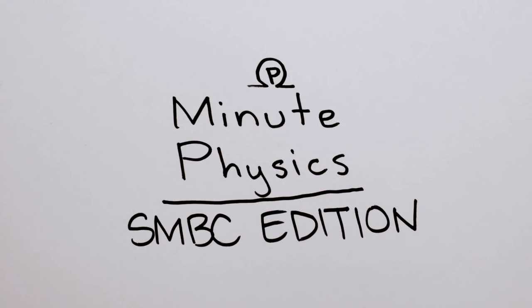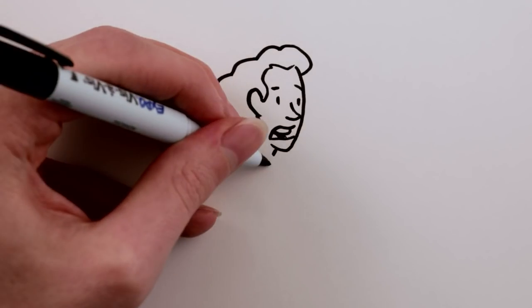Have you ever noticed that some rounded stones are almost spherical, while others are kind of flat like a bar of soap?